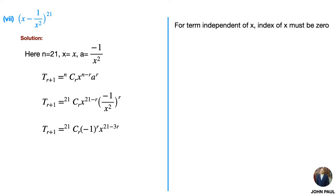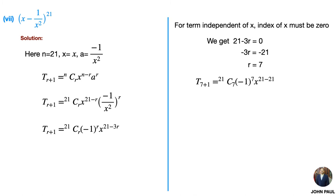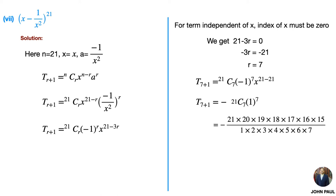For the term independent of x, the power of x must be 0. We get 21 − 3r = 0, so r = 7. Substituting r = 7, we get 21C7 · (−1)^7 · x^(21−21). Since 7 is an odd number the minus sign remains. By simplifying we get −116280. Therefore the term independent of x is −116280.